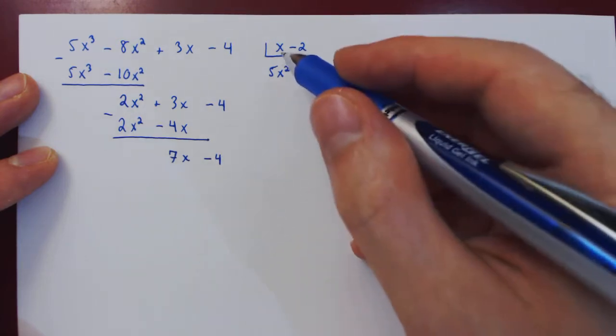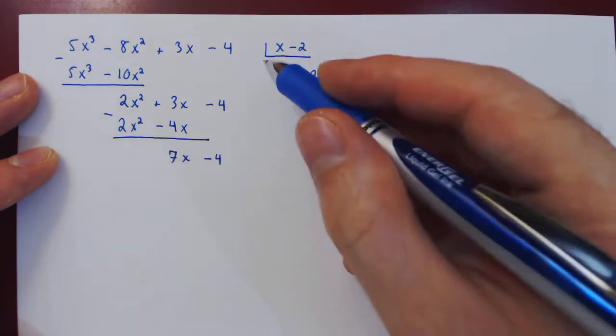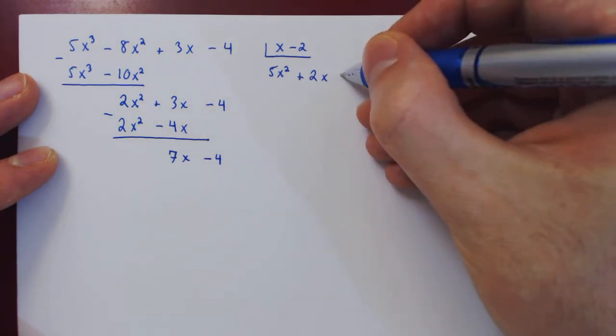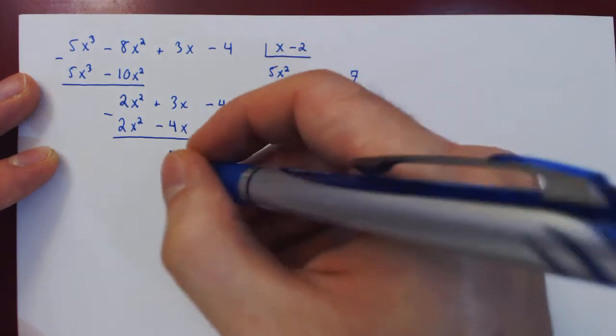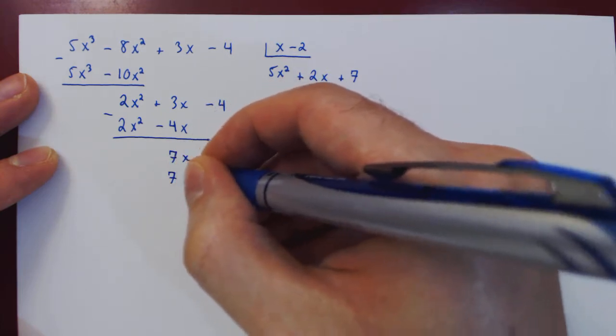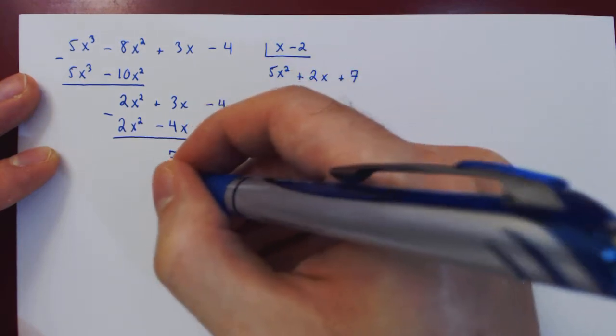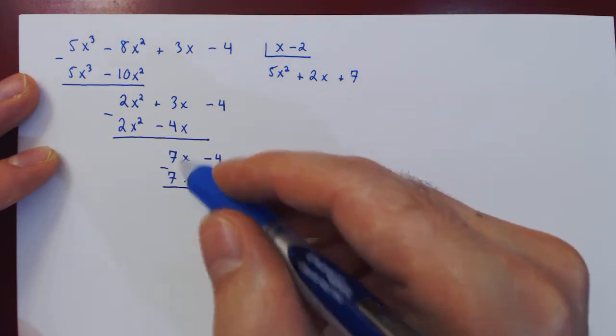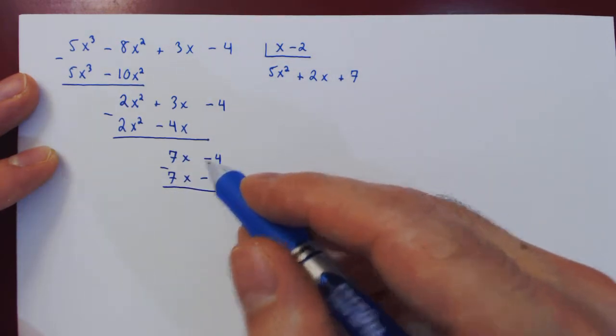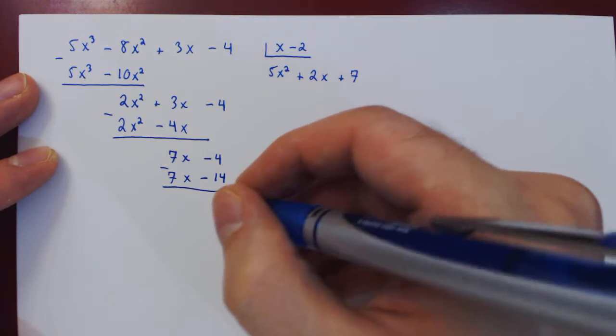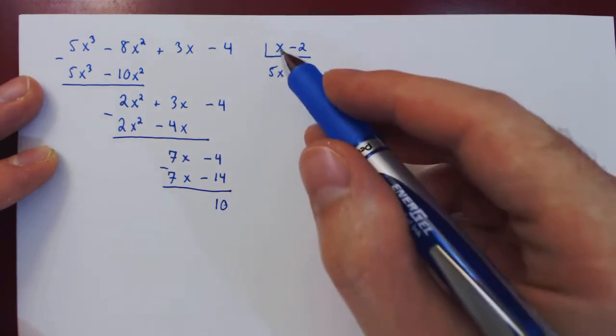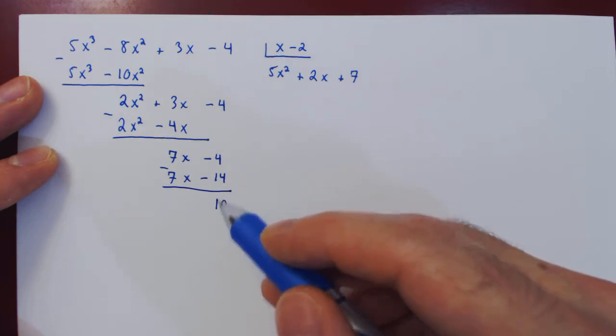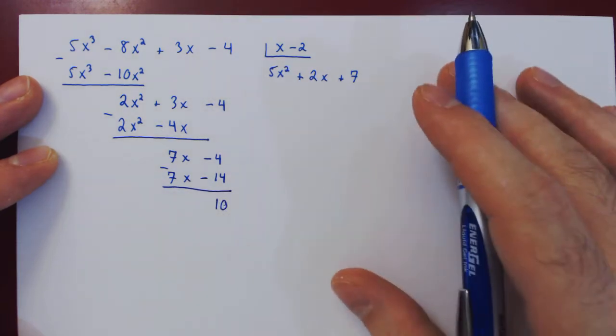And we can keep going. We can eliminate the 7x using x again. So this time plus 7. So 7 times x - 2, 7x - 14. We subtract. 7x cancels. And we're left with -4 positive 14, positive 10. And there's no longer any x's. So now this puts the stop to our long division.